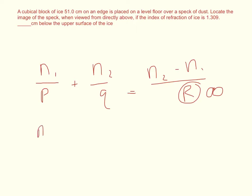So this simplifies. N1 over P plus N2 over Q is equal to N2 minus N1 over infinity. Now, any number divided by infinity, as the denominator approaches infinity, the total answer approaches zero. So this is equal to zero.